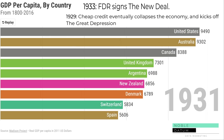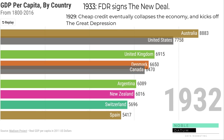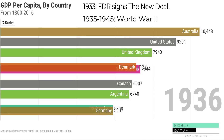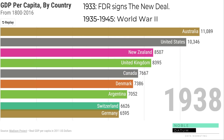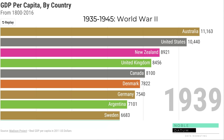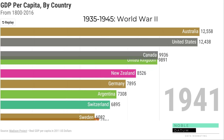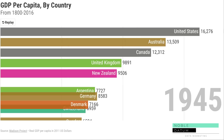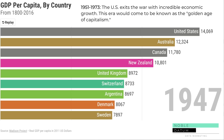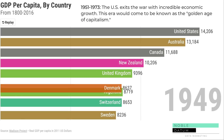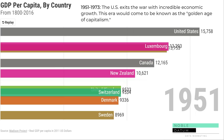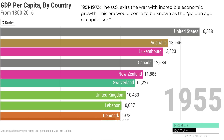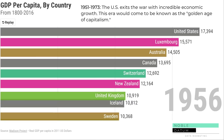In 1933 FDR signs the New Deal. And in 1935, the world falls into World War for the second time. The US exits the war with incredible and sustained economic growth. The preceding years are marked by massive leaps in technology, productivity, and culture. It will come to be known as the Golden Age of capitalism.